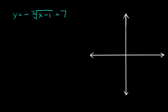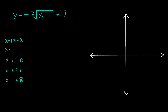So here we have y equals negative cube root of x minus 1 plus 7. The first thing we can do is make an x-y table. This problem is different from the first one because we're taking the cube root of x minus 1, not just x. So we can't just plug in negative 8, negative 1, 0, 1, and 8. What you have to do whenever you have x plus or minus some number is set the expression equal to those perfect cubes: x minus 1 equals negative 8, x minus 1 equals negative 1, x minus 1 equals 0, x minus 1 equals positive 1, and x minus 1 equals positive 8.